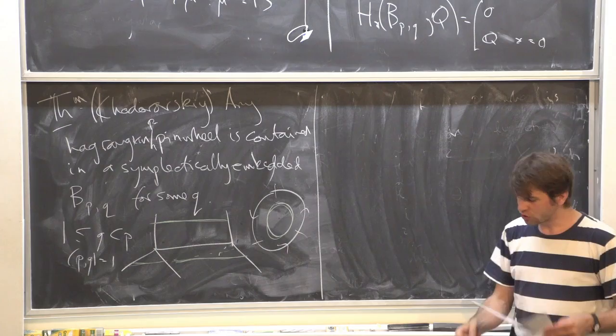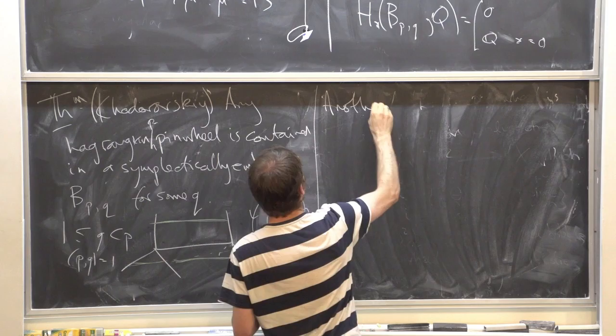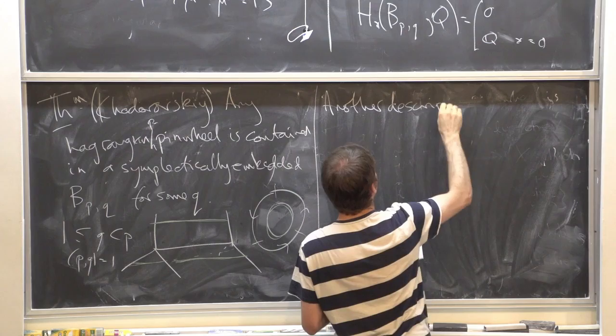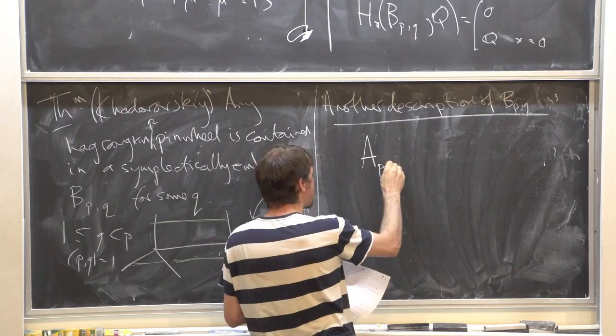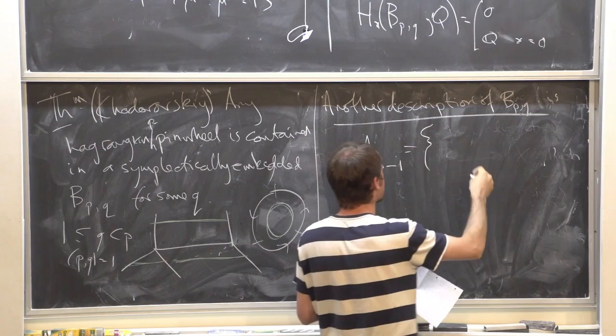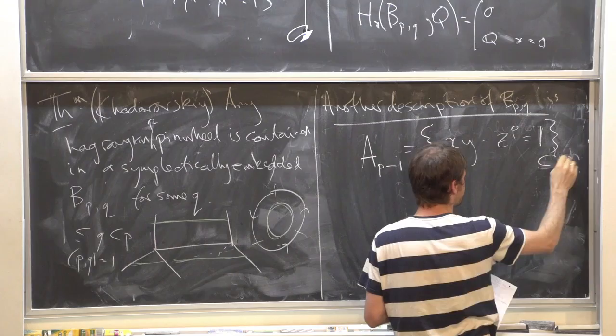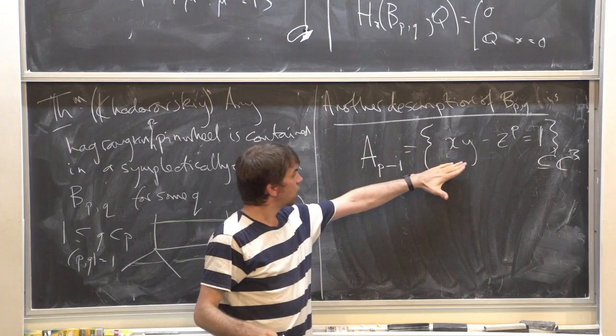I want to give another picture of B_{p,q} to convince you everything I've said is true, and also so you can play with this thing yourself. I'll start with another description of the singularity: the A_{p-1} Milnor fiber. Well, first the A_{p-1} singularity — this is going to be xy - z^p = 1. Forget about the singularity — this is just a smooth surface, the well-known A_{p-1} Milnor fiber.